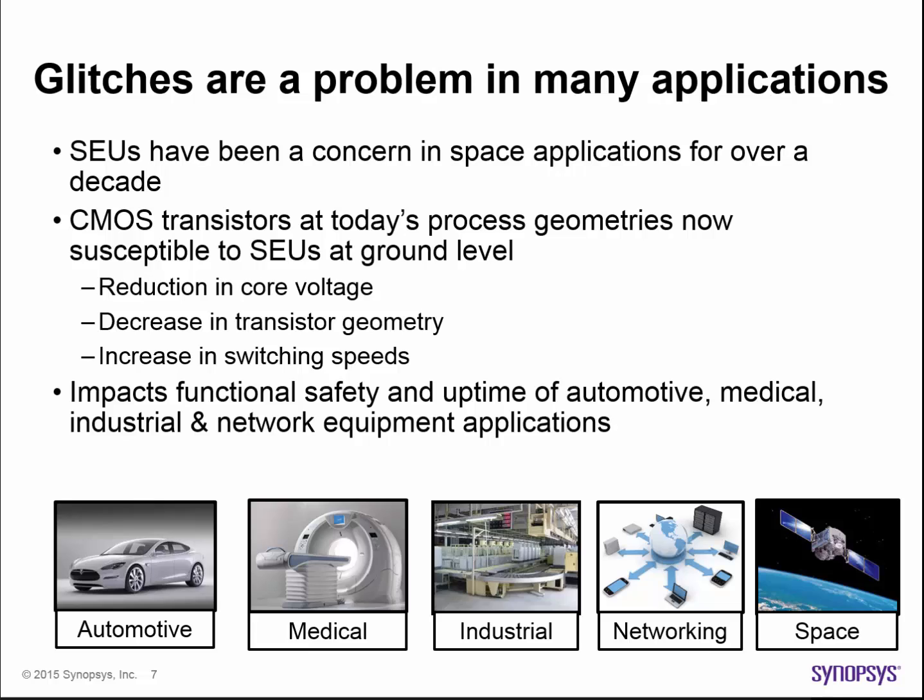As FPGA process technologies advance, the problem gets worse. As the die shrinks, the critical charge required to upset a transistor reduces. 16, 20, and 28 nanometer devices with reduced core voltages and higher transistor switching speeds are more susceptible to SEUs than they ever have been before, and we're already seeing SEUs occur at ground level. As more electronics for things such as MRI, engine control, braking systems, and collision avoidance find their way into automobiles, medical equipment, and industrial control applications, there is little to no margin for allowing SEUs to result in human harm. For communications equipment, whose failure might not necessarily endanger lives, an SEU can negatively impact quality of service.